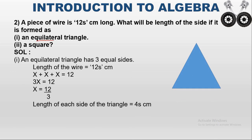We have to find the length of each side of the triangle. If one side is X, the other two sides are also X since it is equilateral. The total length of wire is 12, so X plus X plus X equals 12. That gives 3X equals 12. When 3 moves to the right side, it becomes division: X equals 12 divided by 3, which is 4. So the length of each side of the triangle is 4 centimeters.